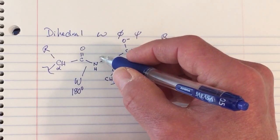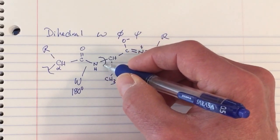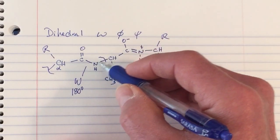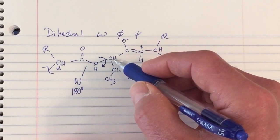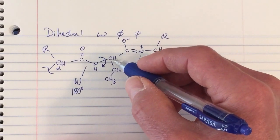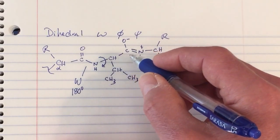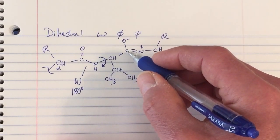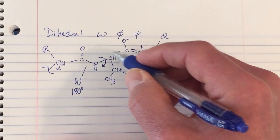The second dihedral angle is the rotation about the amide nitrogen-alpha carbon bond, called Phi. Then the bond connecting the alpha carbon and the carbonyl group is called Psi. So we can draw in here Phi and Psi.